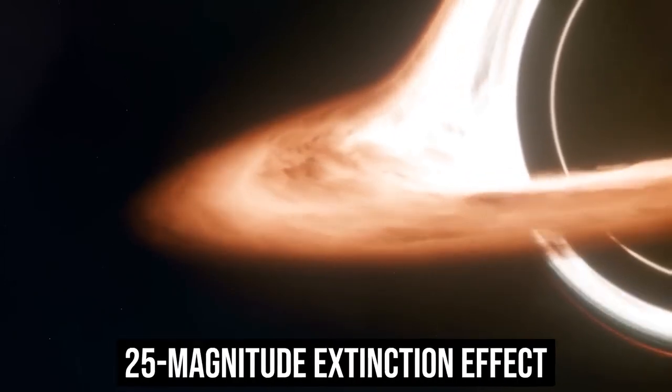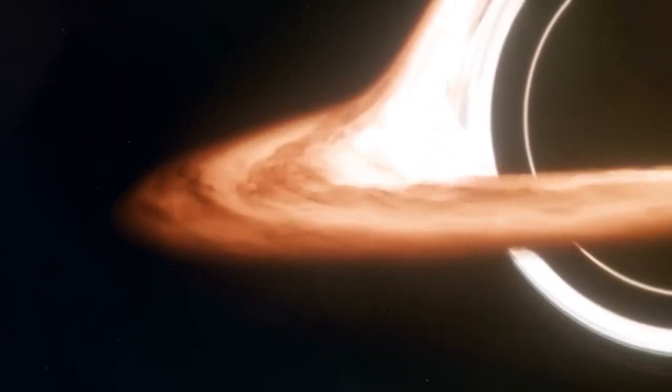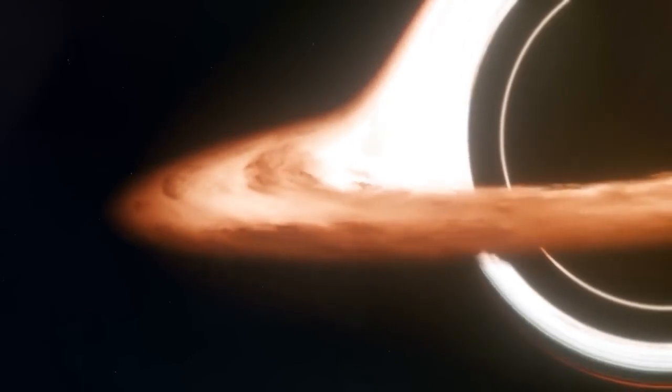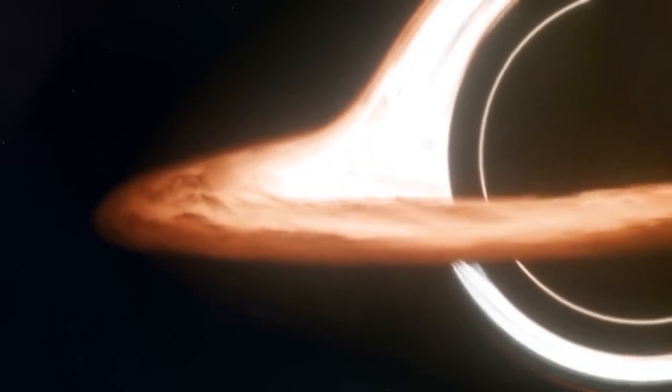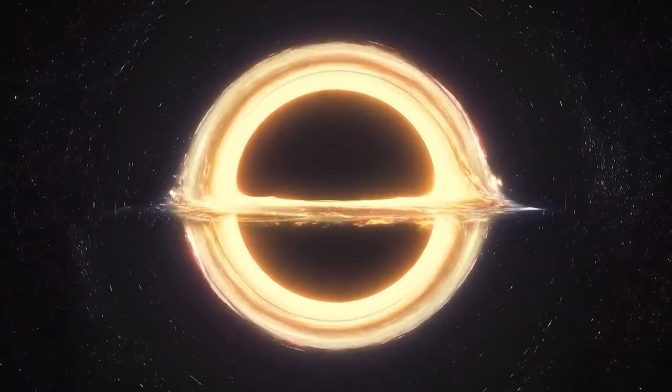Due to a 25-magnitude extinction effect, Sagittarius A is invisible at optical wavelengths. Massive dust clouds in the spiral arms of the Milky Way block our view of the source.